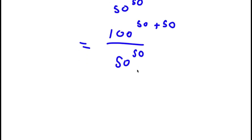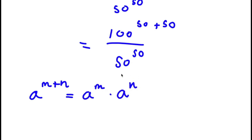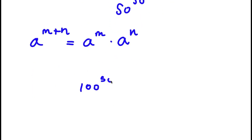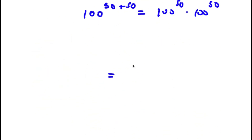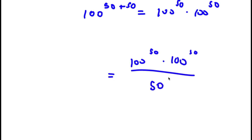An important property of exponents is that if I have something in the form a to the power of m plus n, this is simply equal to a to the power of m times a to the power of n. So 100 to the power of 50 plus 50 equals 100 to the power of 50 times 100 to the power of 50. So now I have 100 to the power of 50 times 100 to the power of 50, all over 50 to the power of 50.